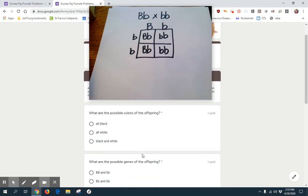So the first question is, what are the possible colors of the offspring? Well, as I just said, we're going to have 50-50 black, 50-50 white. So black and white would be the right answer for that one.